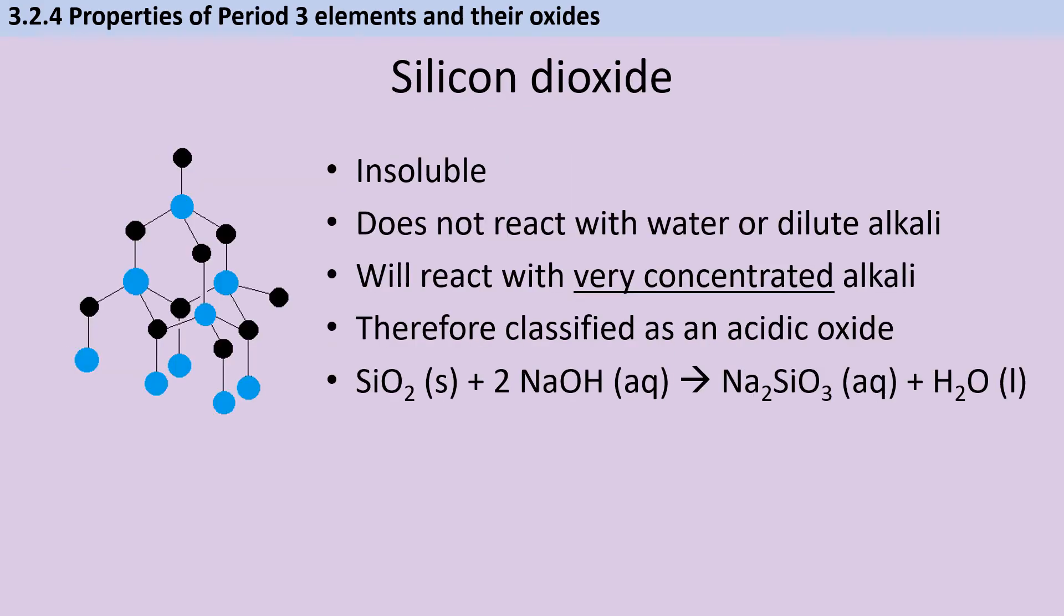You first met silicon dioxide in GCSE chemistry where it was an example of a giant covalent structure or a macromolecule. So you already know that it contains thousands of atoms covalently bonded together, and this makes it very hard, gives it a very high melting point, makes it very unreactive, and also makes it almost completely insoluble. However, chemists love to classify things, and so we want to be able to call it either an acidic oxide or a basic oxide. Now, silicon dioxide won't react at all with water or dilute alkali, but it will react with very concentrated alkali, and therefore we do classify it as an acidic oxide.